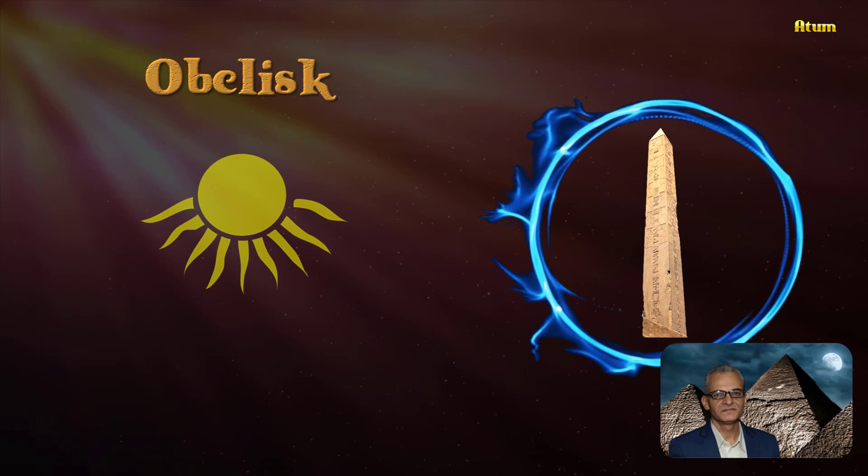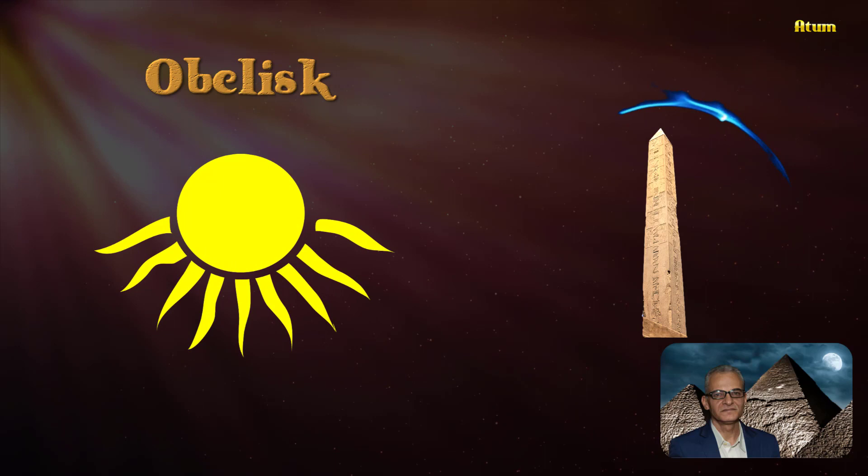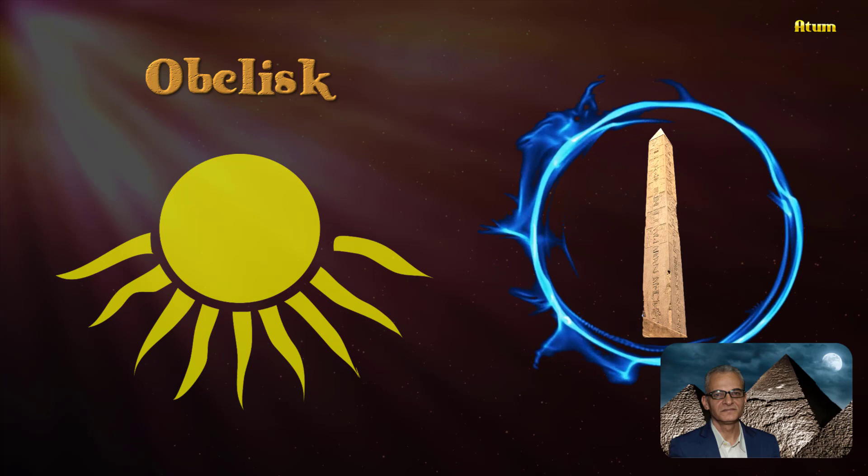One of the most basic symbolic meanings of the obelisk was as an image of the sun's rays. Solar worship was a prime religious belief among the ancient Egyptians.